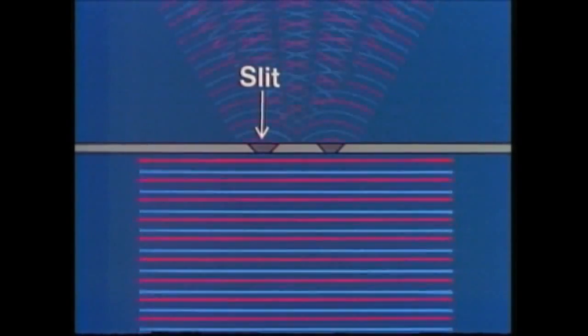The same kind of fringe pattern appears as with the water waves. This pattern is caused by the interference between the two beams of light after they pass through the slits. The bright areas on the fringe pattern show where the two beams strengthen each other, while the dark areas show where they weaken each other.